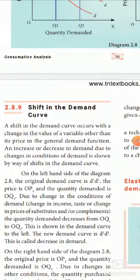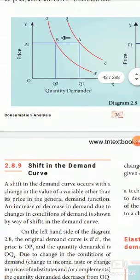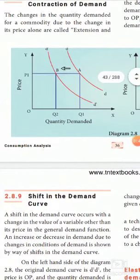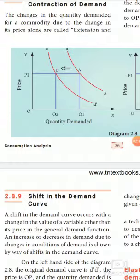When other things change — that is price of substitutes, income of the consumer, taste and preference of the consumer — while price remains the same, the quantity demanded shifts from OQ1 to OQ2 at the same price. This shift in quantity demanded is what constitutes a shift in the demand curve.